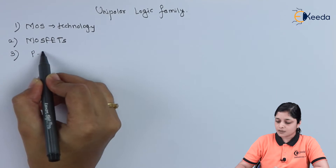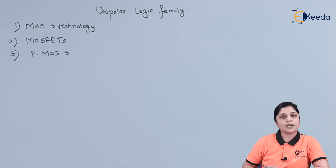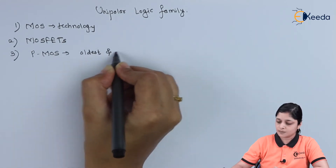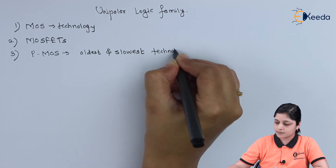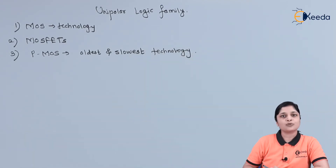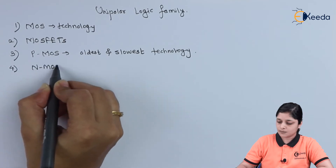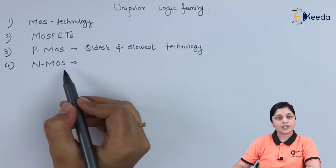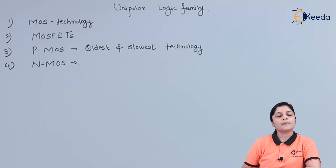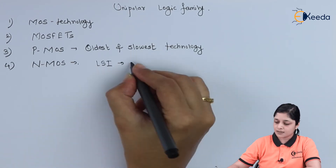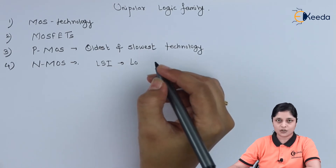P-MOS is the oldest and slowest technology. N-MOS, that is N-channel Metal Oxide Semiconductor, is used for LSI circuits — that is, Large-Scale Integration technology.